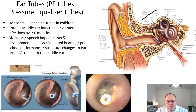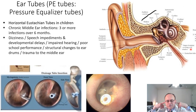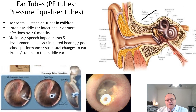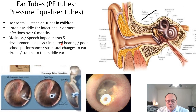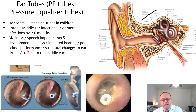The eustachian tube being more horizontal means infections can run easily from the nose into the ears. This may cause a perforation in the tympanic membrane and a collection of fluid in the middle ear, eventually causing deafness. Deafness in children is particularly dangerous as it can lead to speech impediments, developmental delays in speech, impaired hearing, and poor school performance — the child may not be able to hear and could distract the class or be reprimanded by teachers.